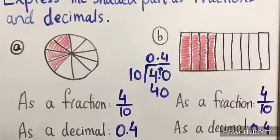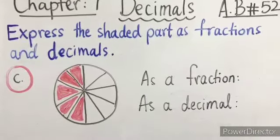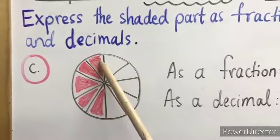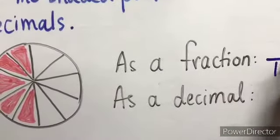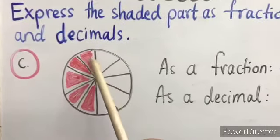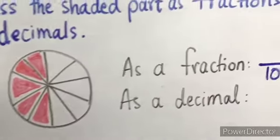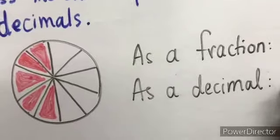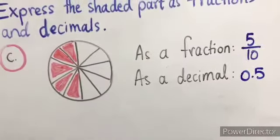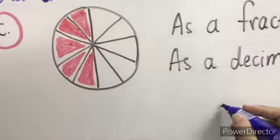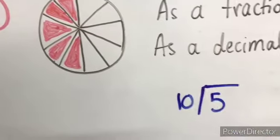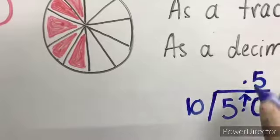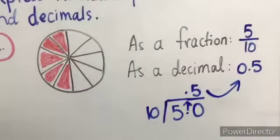Move to question one, part C. Count the total parts: one through ten — denominator is ten. Count the shaded parts: one, two, three, four, five — so the numerator is five. To write as a decimal: put the numerator inside, denominator outside. Add a decimal point and zero — ten fives are fifty. Move the decimal point and write the answer as zero point five.